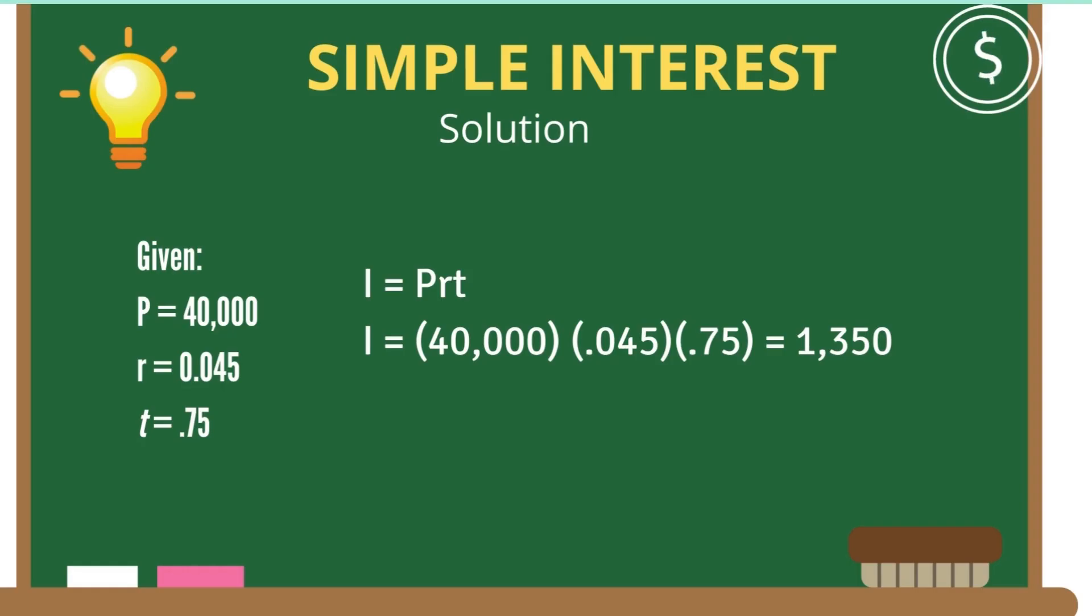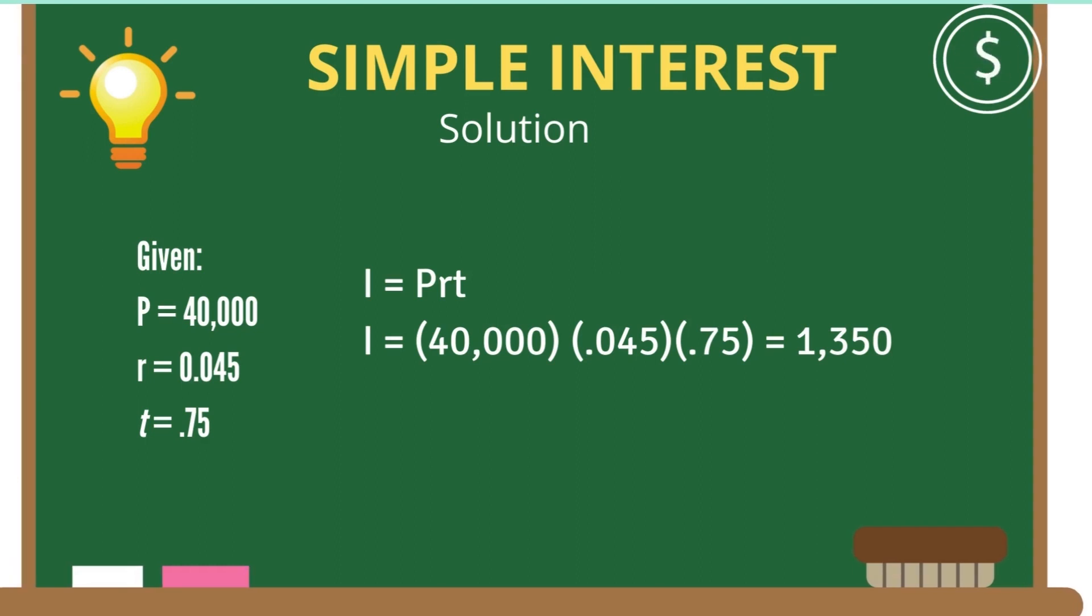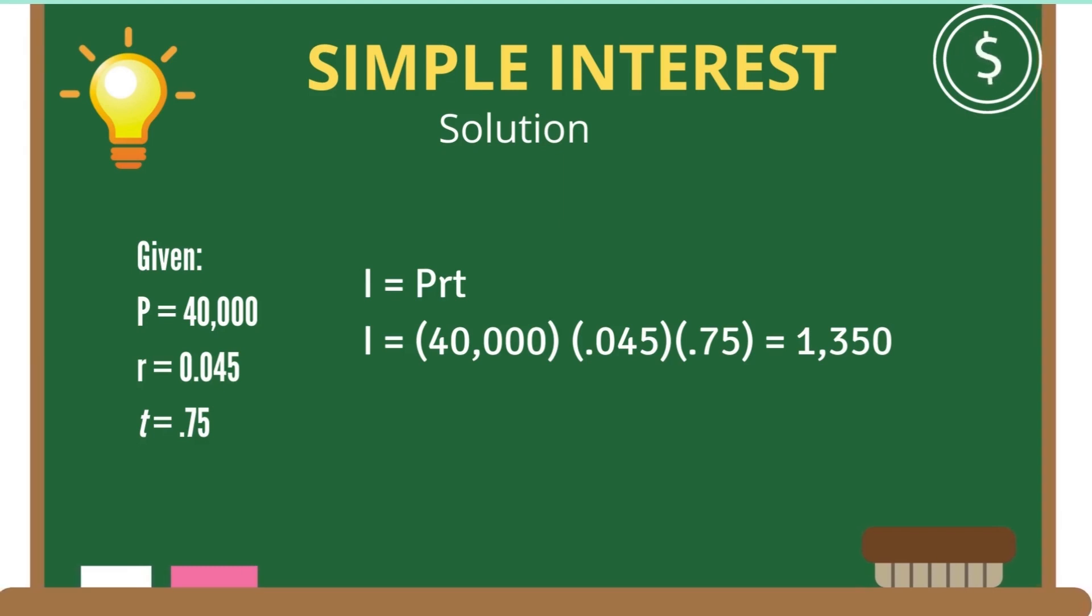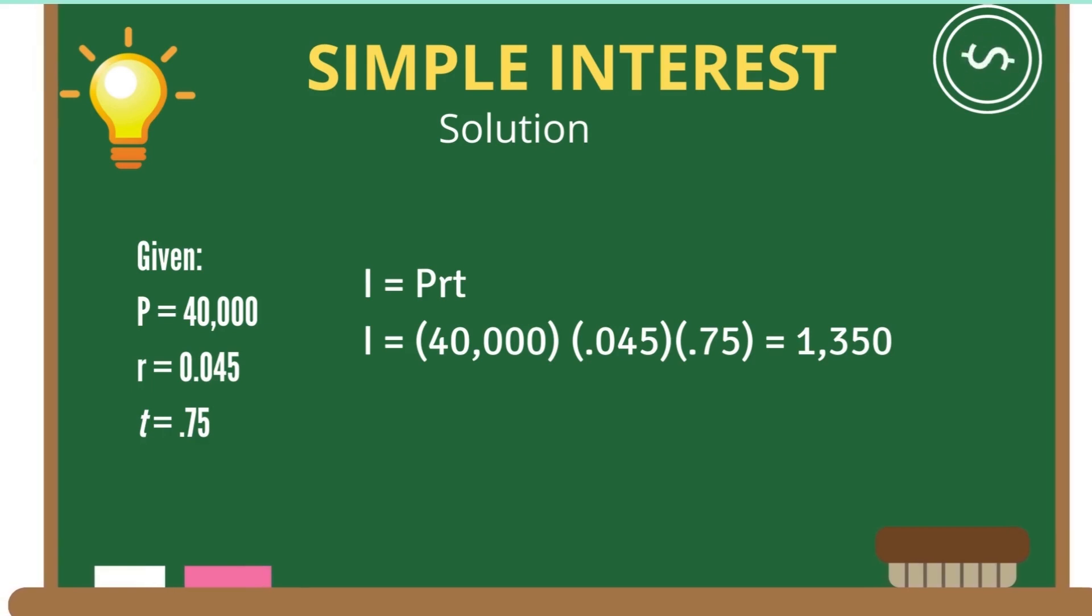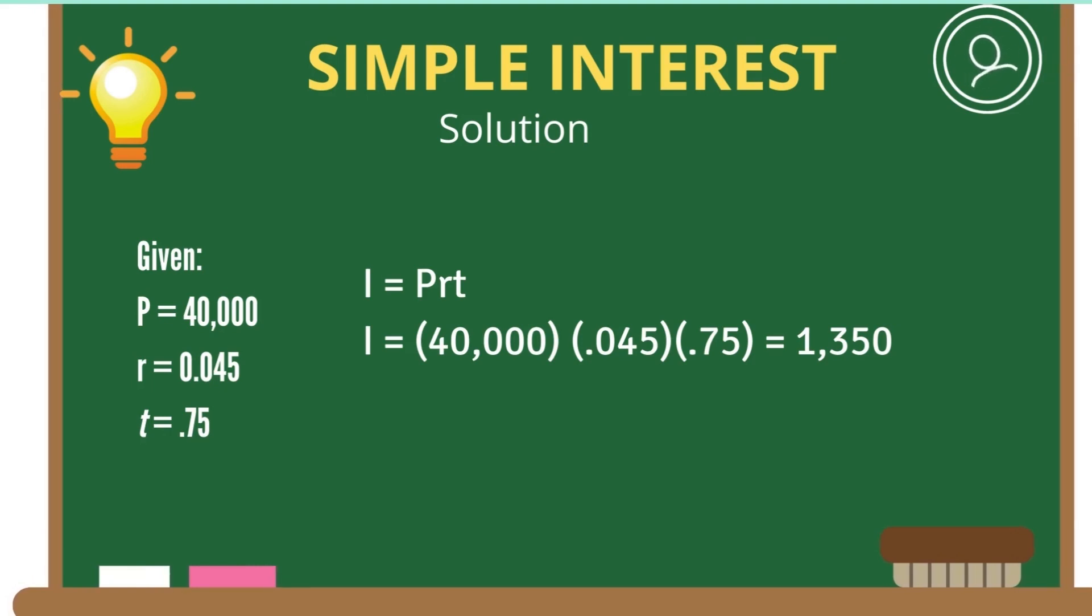Here is the solution. As usual, we have to get the given: the principal is 40,000, the rate is 0.045, and the time is 0.75, which is equal to three-fourths of a year or nine months. We have to solve for I = Prt, where P equals 40,000. You have to multiply it by 0.045 and 0.75, and the answer is 1,350 pesos.